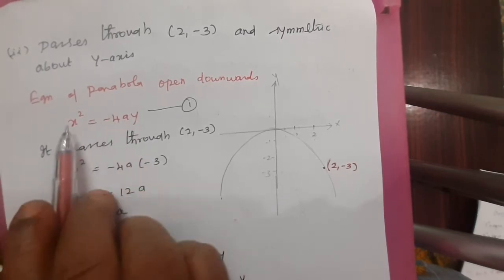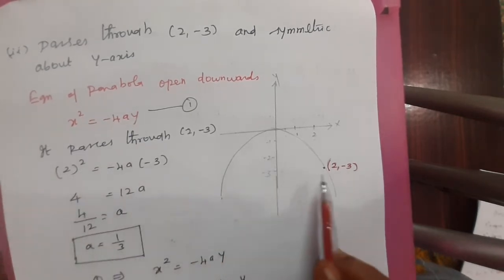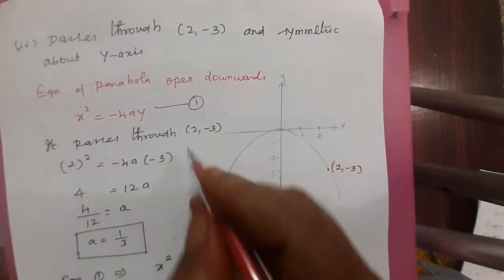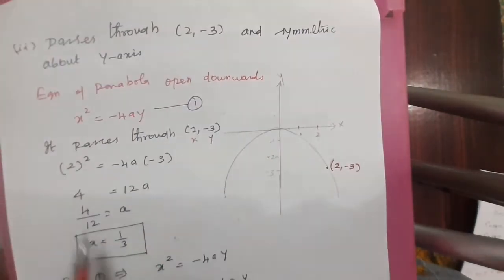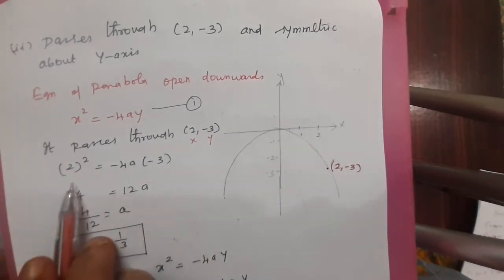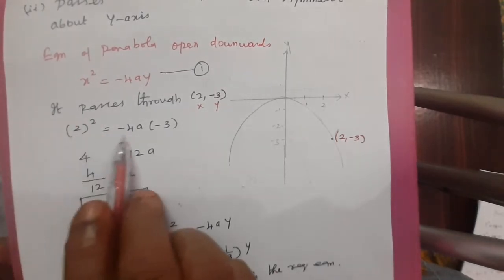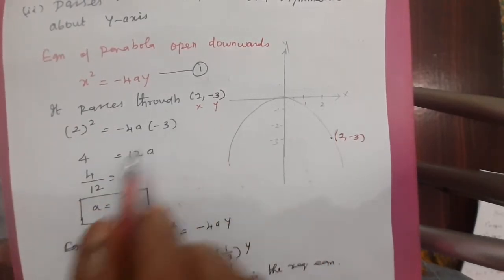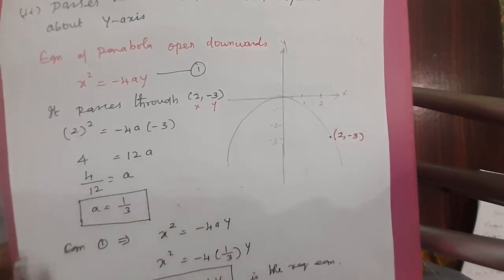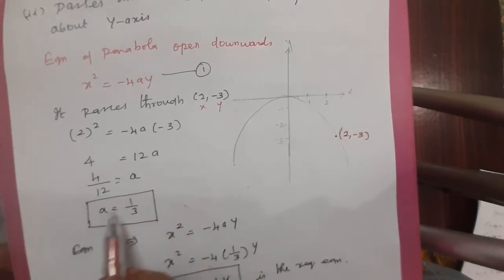The parabola passes through the point 2 comma minus 3. Substitute x equals 2 and y equals minus 3 into x squared equals minus 4ay. So 2 squared equals minus 4a times minus 3. That gives 4 equals 12a. Therefore a equals 4 divided by 12, which is a equals 1 by 3. The diagram is very important — if you understand the diagram, the calculation is very easy.